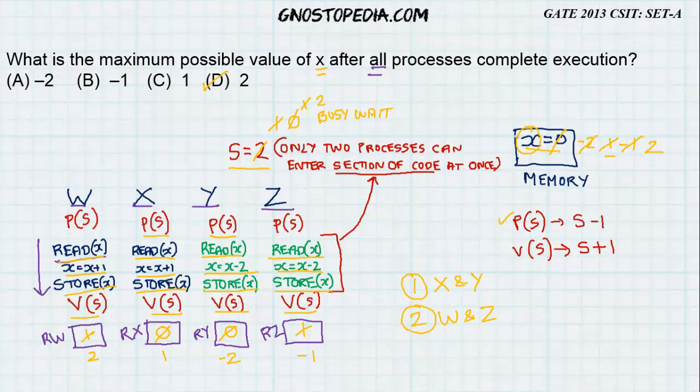That is the maximum possible value of x. The mistake the students make is not considering memory and register. And that's when they get the values other than 2. So, I hope this is clear. If you like this video, please subscribe to our channel and support us. Thank you.